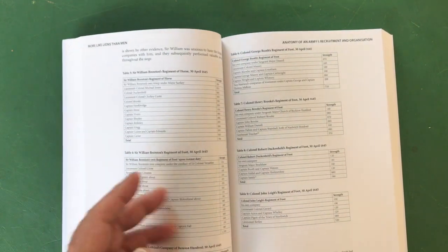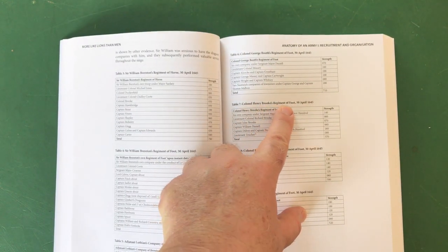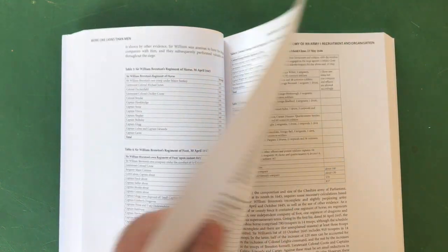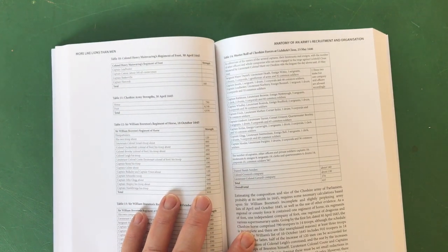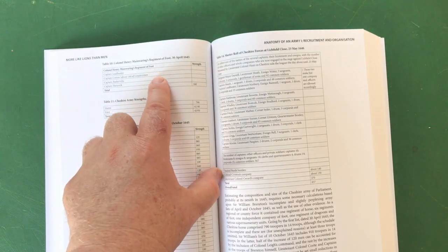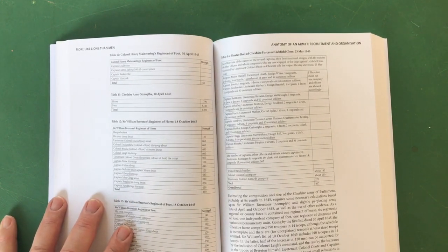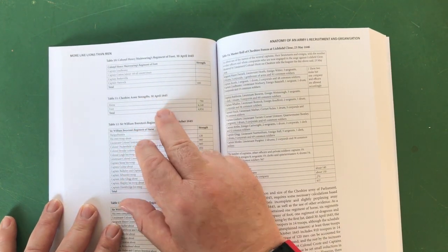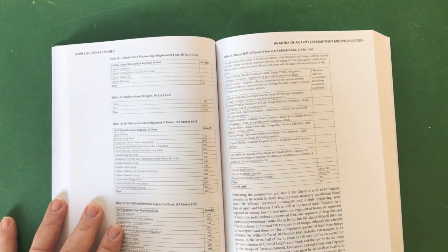And then they come together to form the regiment. Here we are again: Colonel George Booth's Regiment of Foot, Colonel Henry Brooke's Regiment of Foot, Colonel Robert Duckenfield's Regiment of Foot, Colonel John Lee's Regiment of Foot over the pages, Colonel Henry Mannering's Regiment of Foot - remember Captain Mannering. Now this is interesting, they've got a total of 160 men. We haven't actually got the breakdown there of the individual troops. We can take a guess that it was probably something around 40 men each - four 40s make 160. So the Cheshire army strength on the 30th of April 1645: 790 horse, 4140 foot, totaling 4930 men.